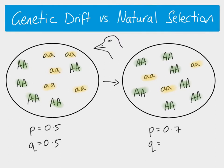Because the dominant allele was more likely to be passed on, we now see that its frequency has increased to 0.7, and the frequency for the recessive allele has decreased. This change is not random — it is a direct result of the selection pressure. This is an example of directional natural selection.